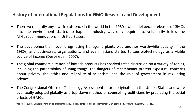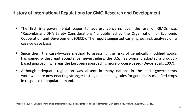The first intergovernmental paper to address concerns over the use of GMOs was 'Recombinant DNA Safety Considerations' published by the Organization for Economic Cooperation and Development. The report suggested carrying out risk analysis on a case-by-case basis, and since then the case-by-case method to assess the risks of genetically modified goods has gained widespread acceptance. Nevertheless, the US has typically adopted the product-based approach whereas the European approach is more process-based. Although adequate regulation was absent in many nations in the past, governments worldwide are now enacting stronger testing and labeling rules for genetically modified crops in response to public demand.